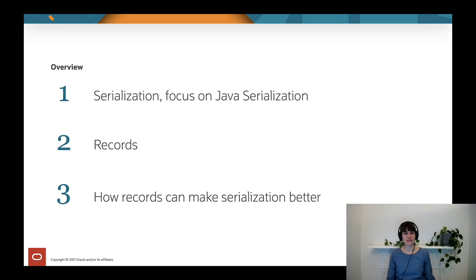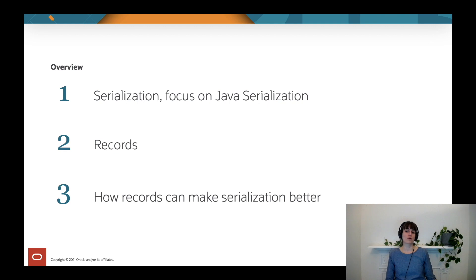We first look at the concept of serialization and then focus on Java's serialization framework. In the second part we look at records, why they were added to the JDK and what they bring to the platform. And then in the third part we bring those two parts together to explore what advantages records have in the context of serialization.